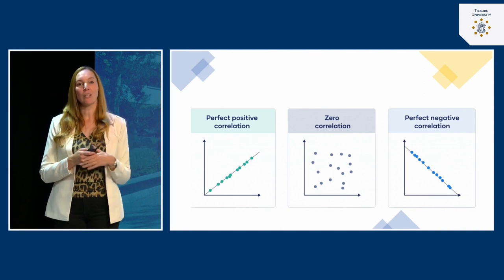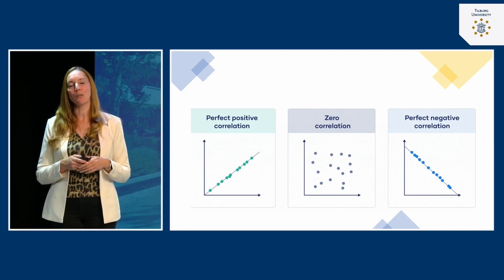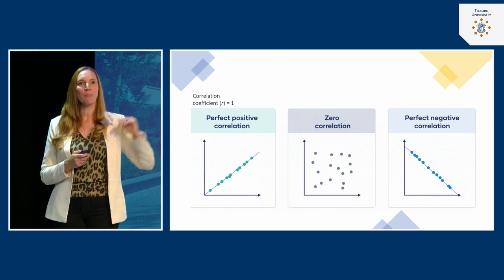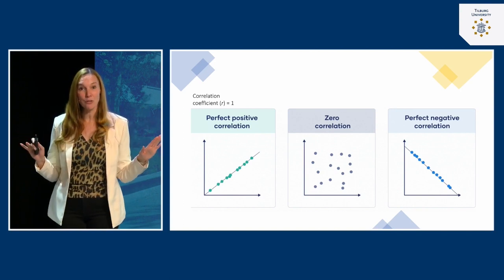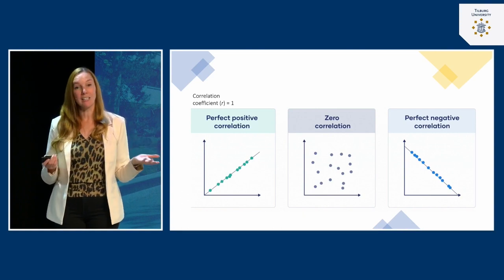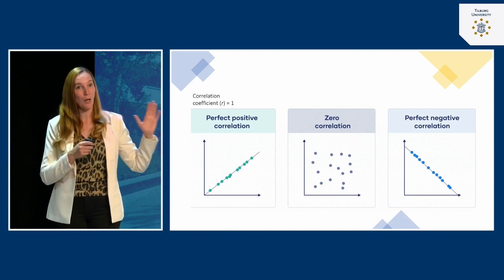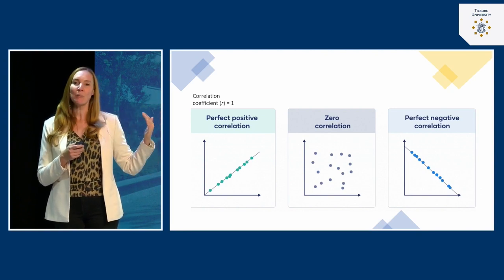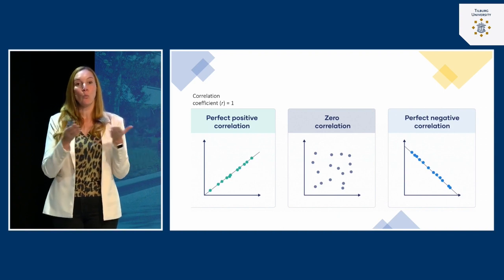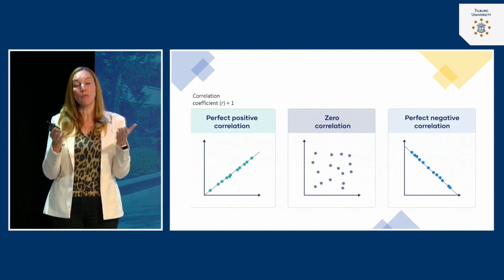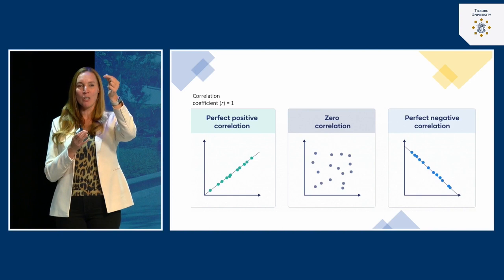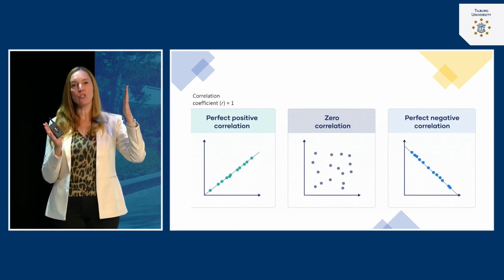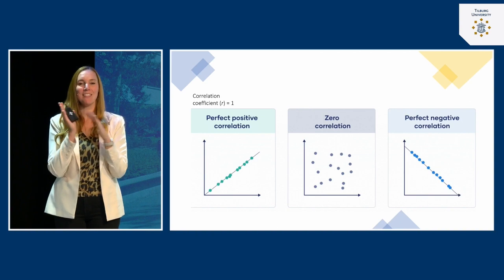When you use a correlational design, you find an outcome that you can plot in a graph. Here you see several possible outcomes of correlational research — this is not real data, just an illustration. The first is a perfect positive correlation, something you never find in actual research. A correlation of one means that if you know one factor, such as extroversion score, you can perfectly predict how many friends they have.